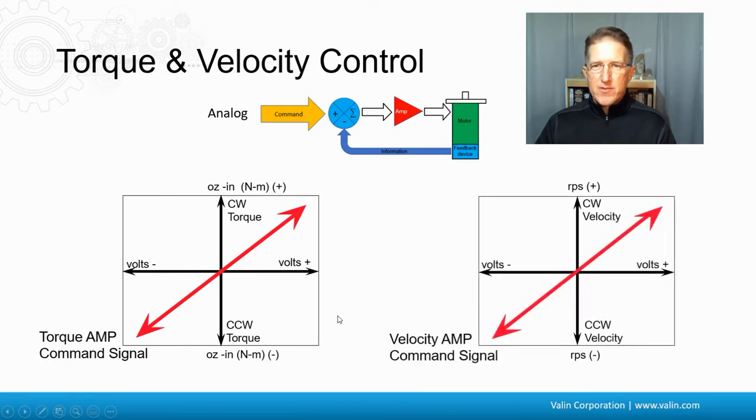Well, the same thing applies for the velocity, except it's not in torque. It's actually in velocity. So this is plus or minus 10 volts. Positive 10 volts is clockwise velocity. Zero is zero velocity. And then minus 10 volts is the negative velocity, typically defined as the counterclockwise direction. So that's the torque and the velocity.